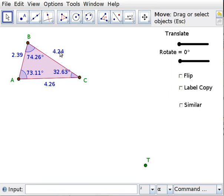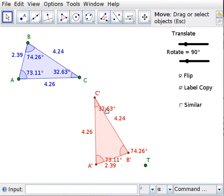They've got the same lengths, they've got the same angles: 32.63, 73.11, 74.26, the same lengths: 2.39, 4.26, 4.24.